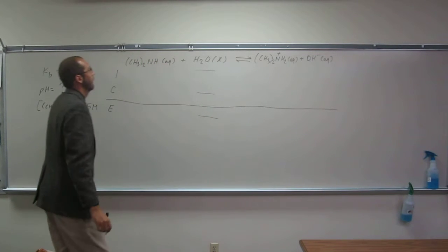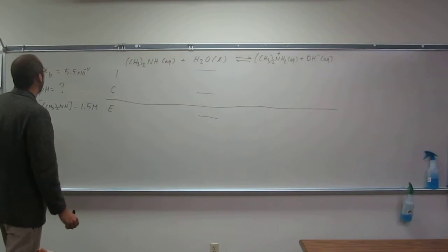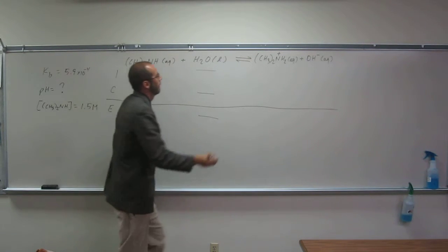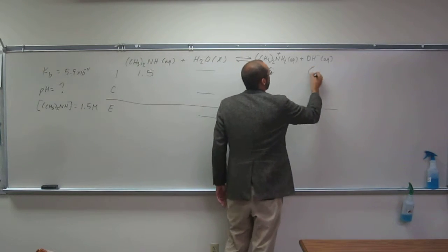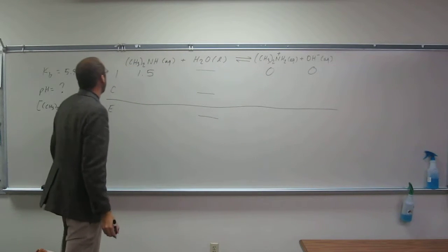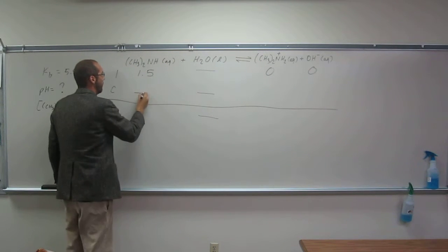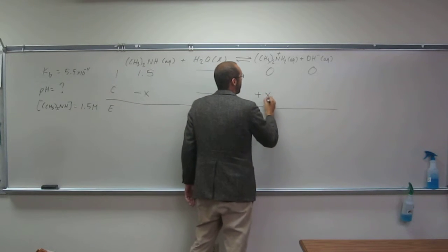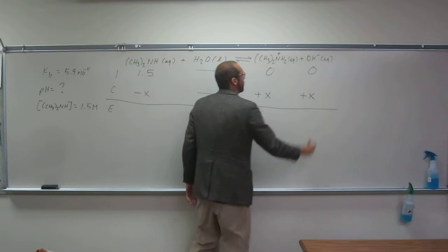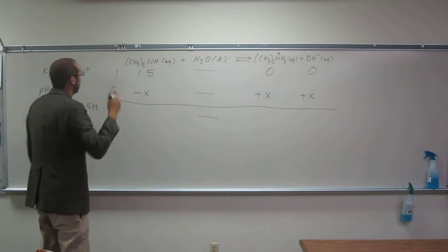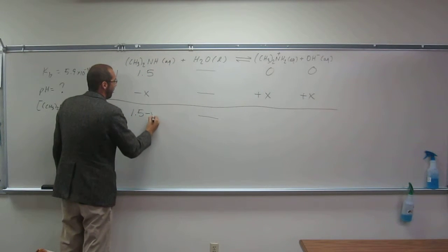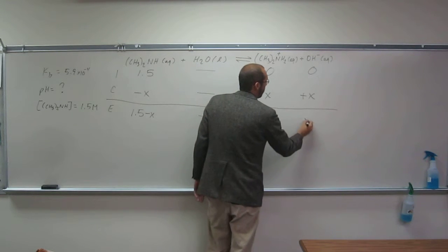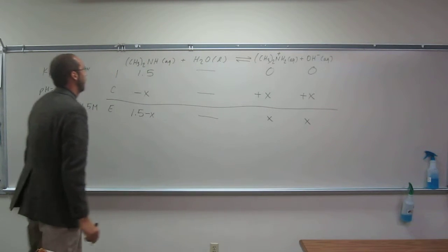So like that, it gives us 1.5 molar to start out with. We started out with 0, 0 there. The change would be, well of course, minus x there, plus x there, and plus x there. Okay, so 1.5 minus x, x, and x, right?